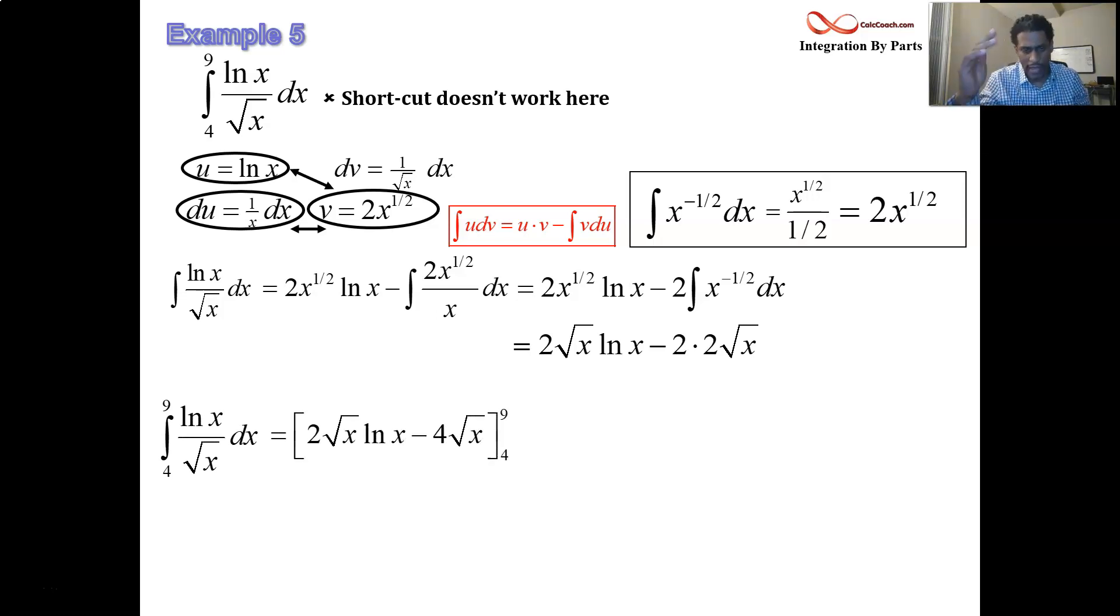Okay. We have the full antiderivative now. It is 2 root x log x minus 4 root x. And we're ready to plug in these original bounds. 9 is the upper limit and 4 is the lower limit. Put a 9 in and put a 4 in. Upper limit minus lower limit evaluation. Root 9 is 3. Root 4 is 2. So that's going to be a 6 natural log of 9 minus a 12. And then a 4 natural log of 4 minus an 8.